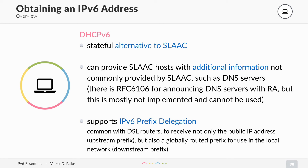We have RFC 6106 for announcing DNS servers with the router advertisement, but this is mostly not implemented, so you cannot rely on it. In most cases, people that use SLAAC in their networks — for example, a corporate network with a client VLAN for marketing — announce the marketing prefix and the router, but cannot announce the DNS server. To fix that, you can set a specific flag in the router advertisement meaning 'please check DHCP additionally,' and then do a DHCPv6 request just for the DNS servers, not the IP address, since that is already configured using SLAAC.